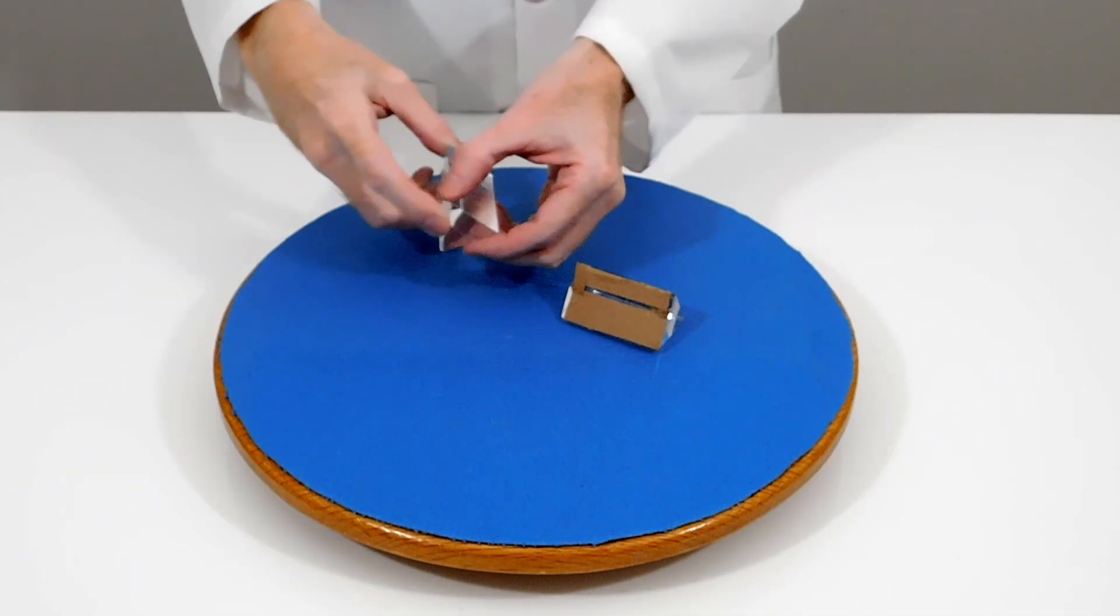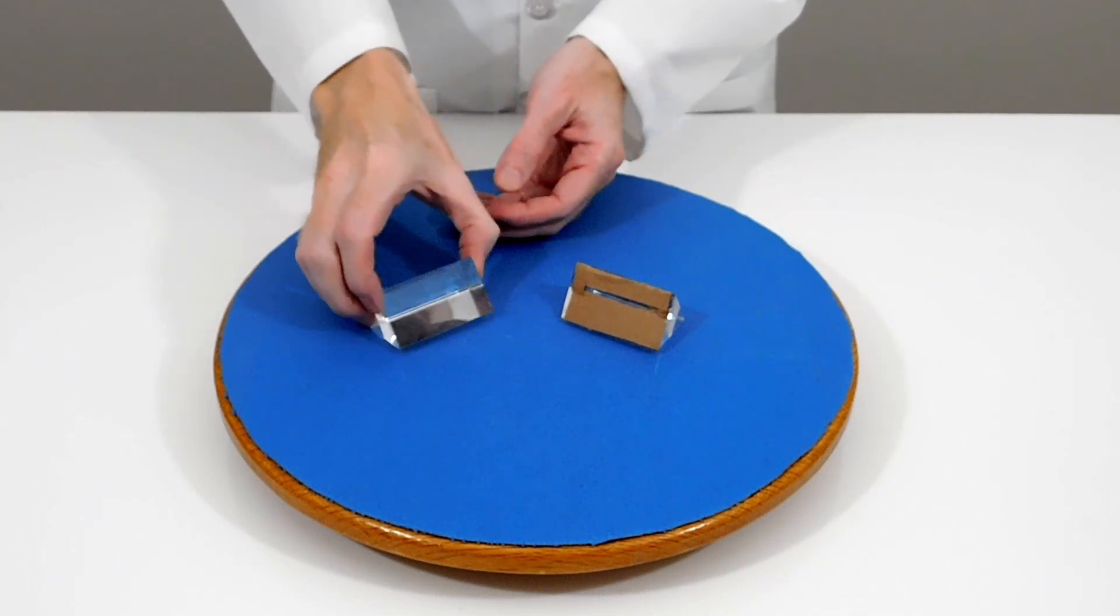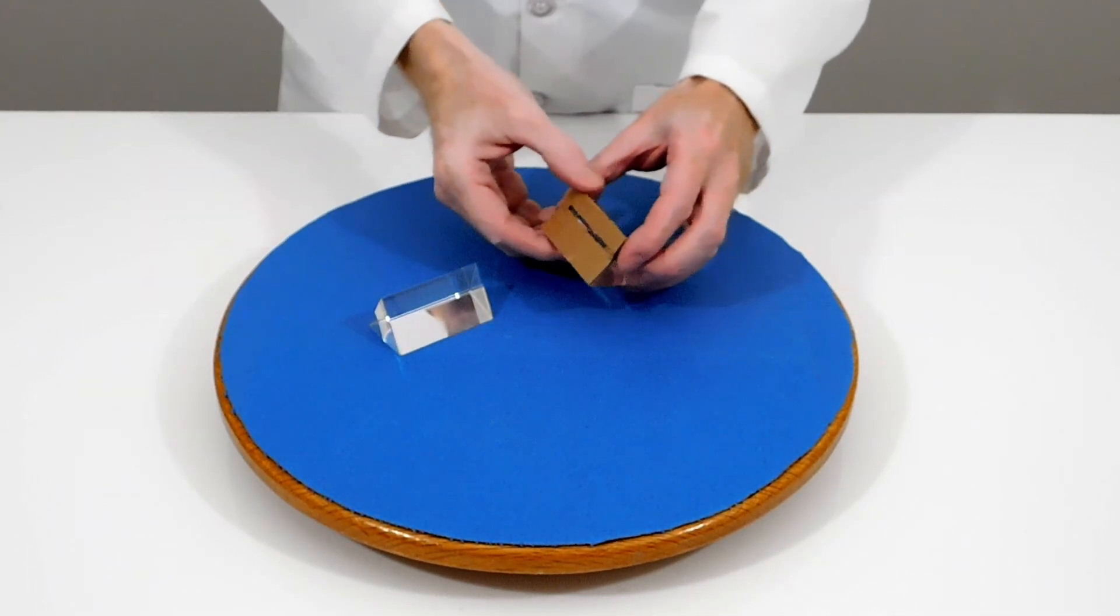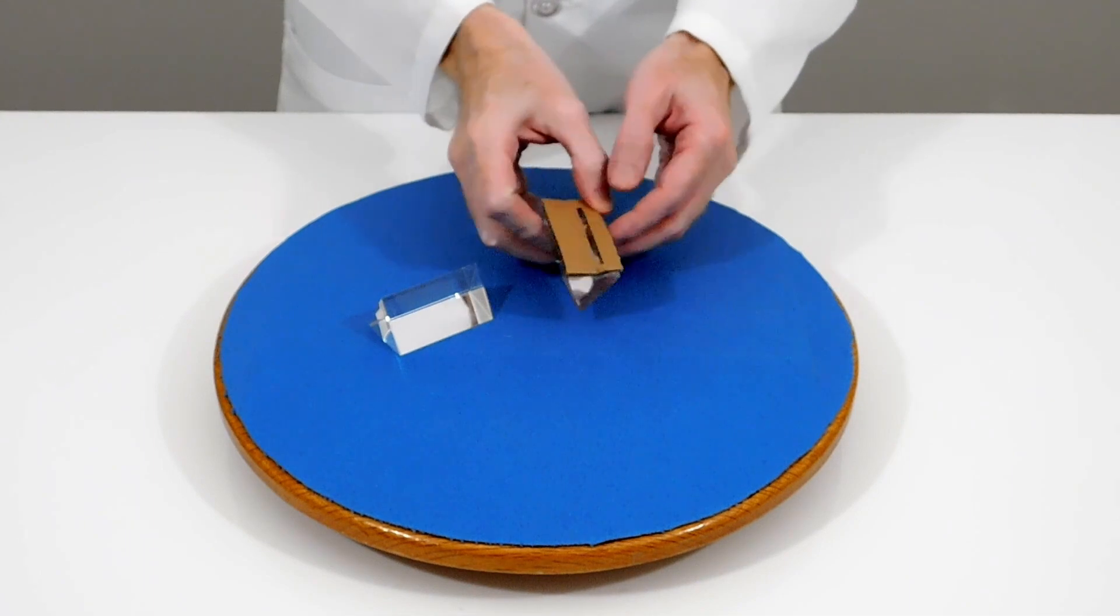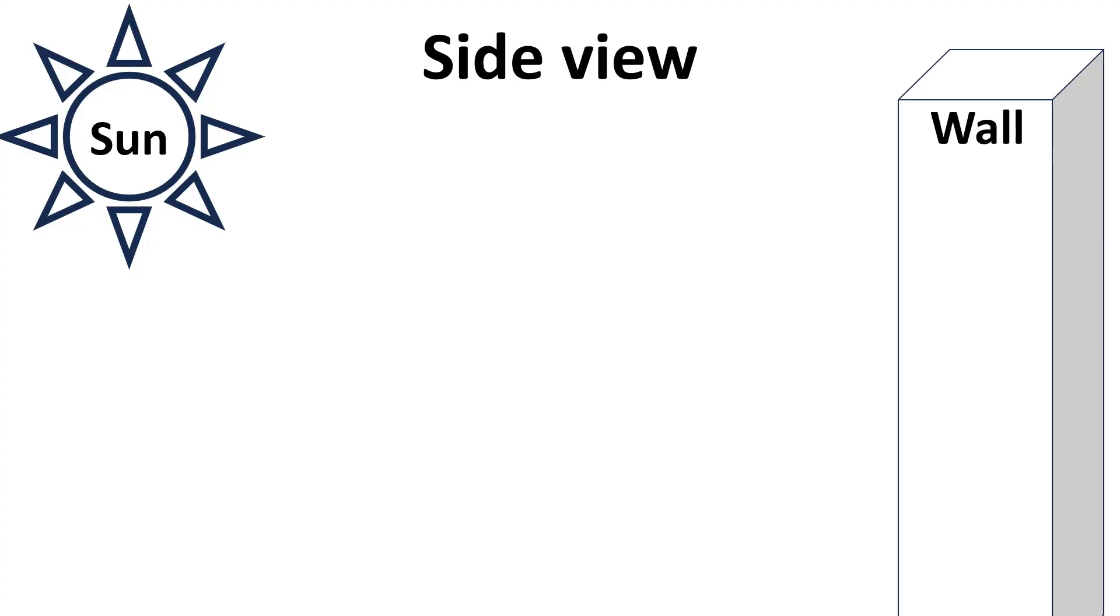Newton used two prisms, but one of them he partially shielded so only a narrow beam of light could enter it. To make things simple, we've shielded this prism by covering one side with cardboard, except for a narrow opening. Even with one side almost totally covered, the prism still works because when white light enters, a full spectrum of colors exits.